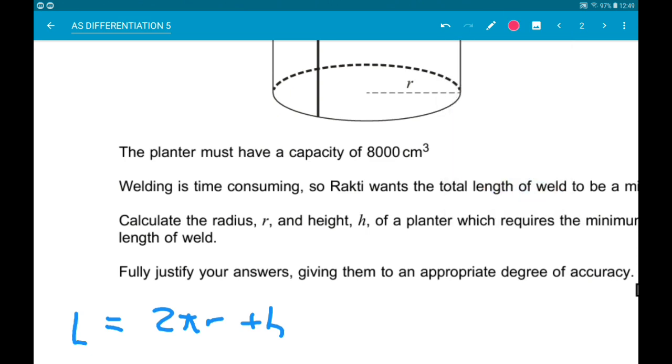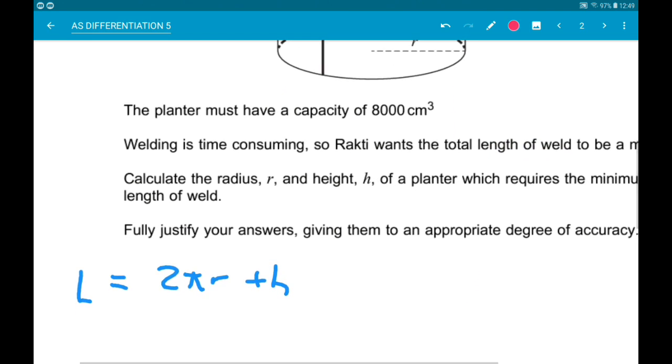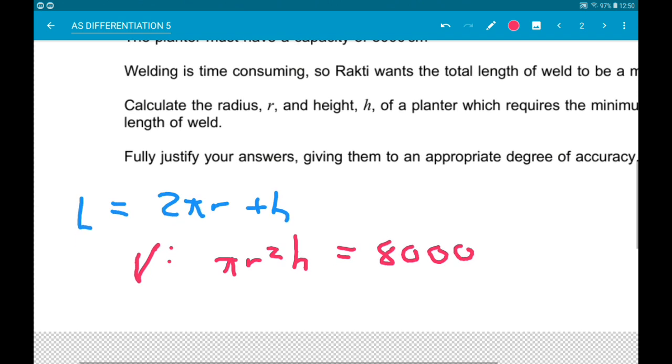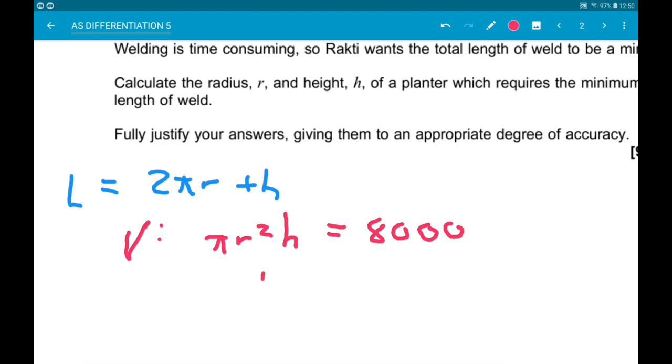We know the volume must be 8,000 centimeters cubed. Now, in terms of R and H, that's πr²h. So πr²h must be 8,000. Now, from that, I would say it's easier to get H on its own. So H is 8,000 over πr².